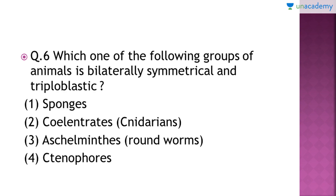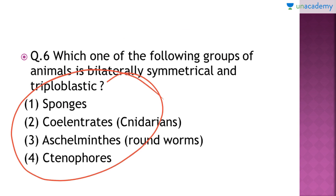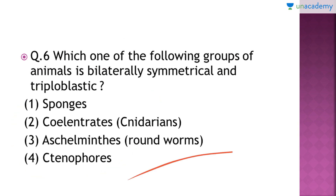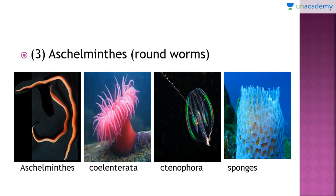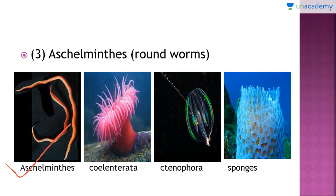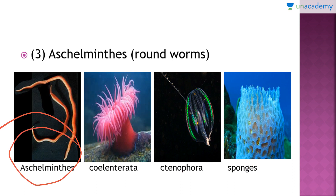Question number 6: which one of the following groups of animals is bilaterally symmetrical and triploblastic? If you know the characteristics of all four organisms given in the options, you can answer this very easily. The right answer is option number 3, that is Aschelminthes, or the roundworms. The four options are roundworms, Coelenterata, Ctenophora, and sponges. Out of these, only roundworms are bilaterally symmetrical as well as triploblastic.